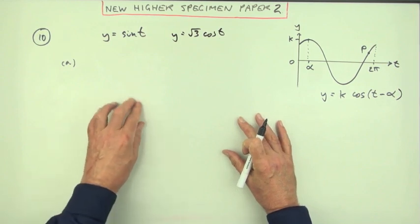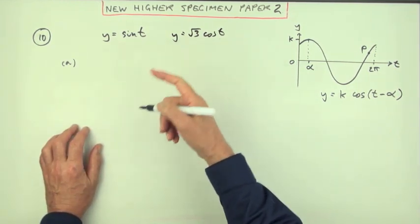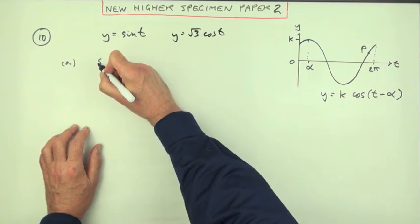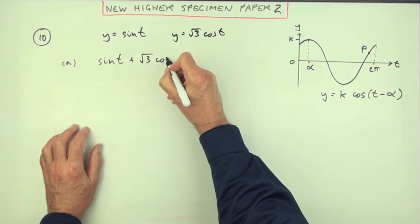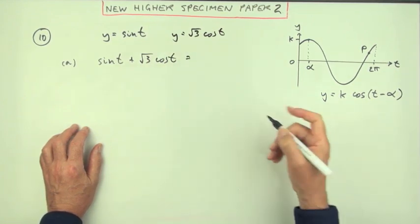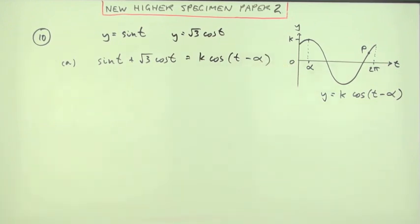Well, there's a very quick way of doing it which you're not allowed to do. I'll mention that afterwards. If you're adding these together, it means you've got sine t plus root 3 cos t equals k cos(t - alpha).